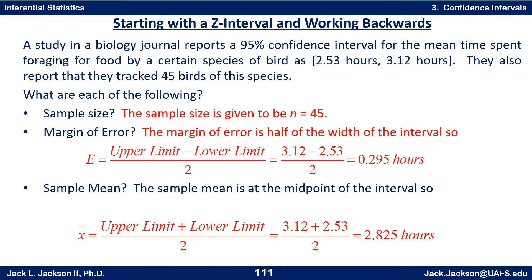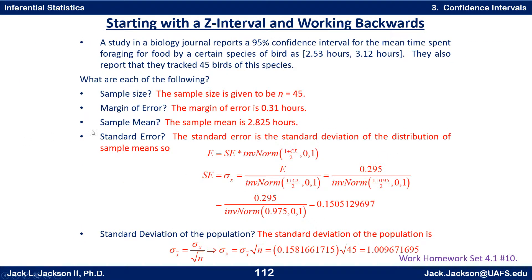Next, how about the standard error of the mean and the standard deviation of the population? The standard error of the mean is the standard deviation of the x-bar values. We have the formula that the margin of error E equals the standard error sigma of the x-bars times the inverse norm of (1 plus confidence level) over 2 from a standard normal. Solving for the standard error gives E divided by that inverse norm.